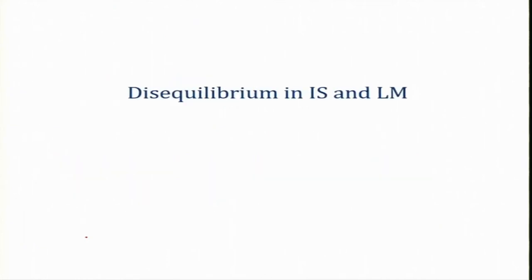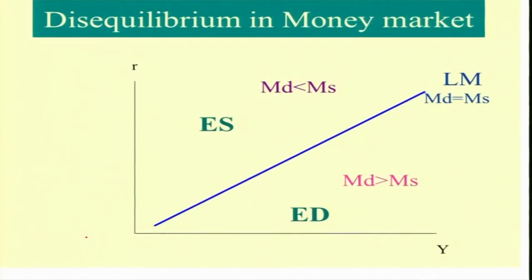Moving further — what if there is some disequilibrium in the IS-LM model? In order to understand, let us review both the LM curve and IS schedule separately. Along the LM curve at each and every point, money supply is equal to money demand — that means the money market is at equilibrium.